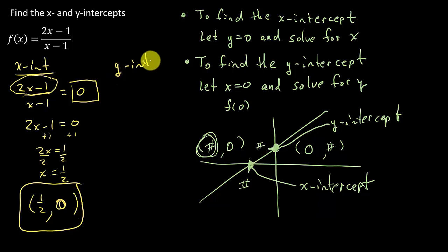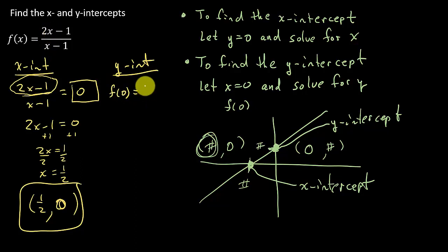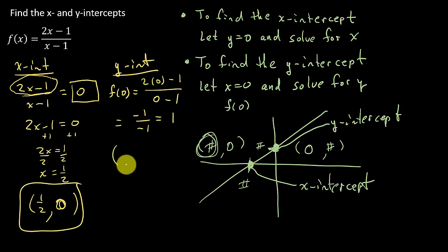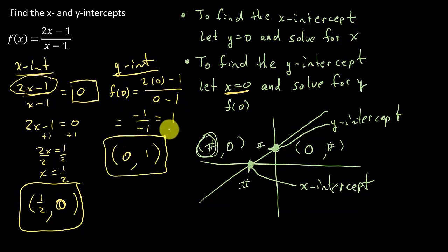Now let's find the y-intercept. To find the y-intercept, I evaluate the function at zero, plugging zero in for x: (2(0) − 1)/(0 − 1) = (−1)/(−1) = 1. So the y-intercept — remember, x was zero and I got y = 1 — is the point (0, 1). And remember, f(x) is the same thing as writing y equals that expression.